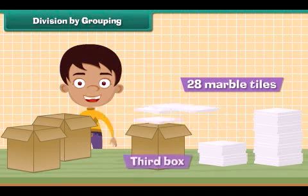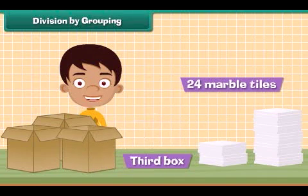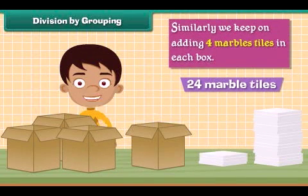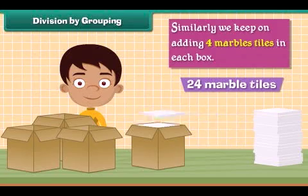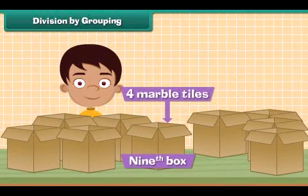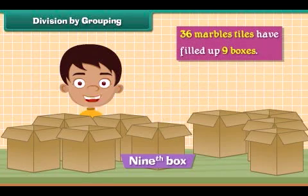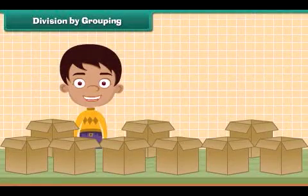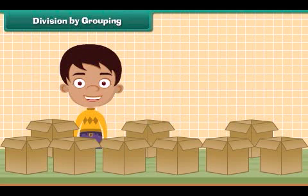4 more marble tiles in the third box. Now 24 marble tiles are left. Similarly we keep on adding 4 marble tiles in each box. So at last we have 9th box in which last 4 marble tiles are kept. 36 marble tiles have filled up 9 boxes. 36 marble tiles are put into equal groups of 4, need 9 boxes.